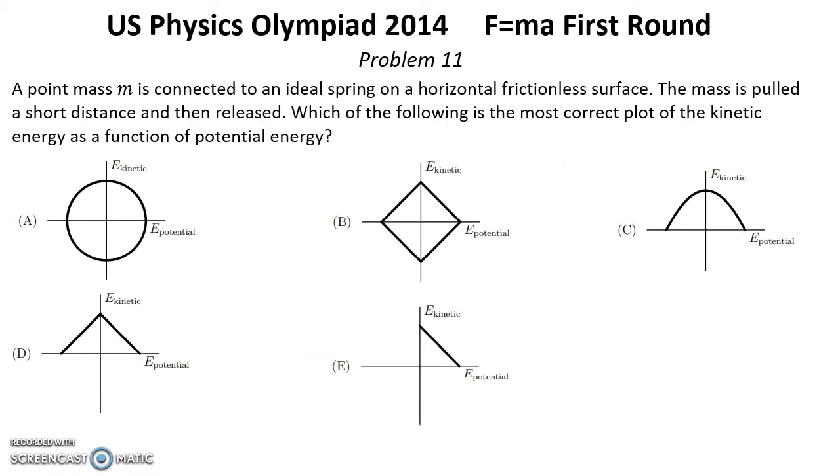Problem number 11. The point mass M is connected to an ideal spring on a horizontal frictionless surface. The mass is pulled a short distance and then released. Which of the following is the most correct plot of the kinetic energy as a function of potential energy?